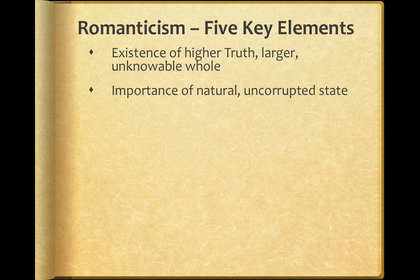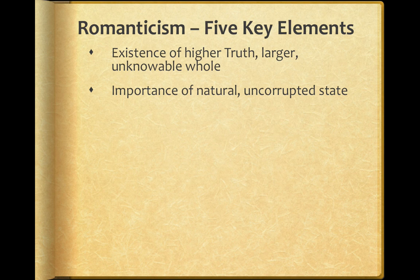One of the ways we can get closer to that higher truth is to maintain our natural, uncorrupted state. The romantics are very back-to-nature people — they believe strongly that human society has corrupted our true, easygoing, genuinely innocent kind nature. Things like cities, factories, and all the other trappings of a modern enlightenment society have corrupted us; we have to go back to nature and back to our original, simplistic selves. That notion that nature is the best way of doing things and that we must not be corrupted by society is a big deal with the romantics.